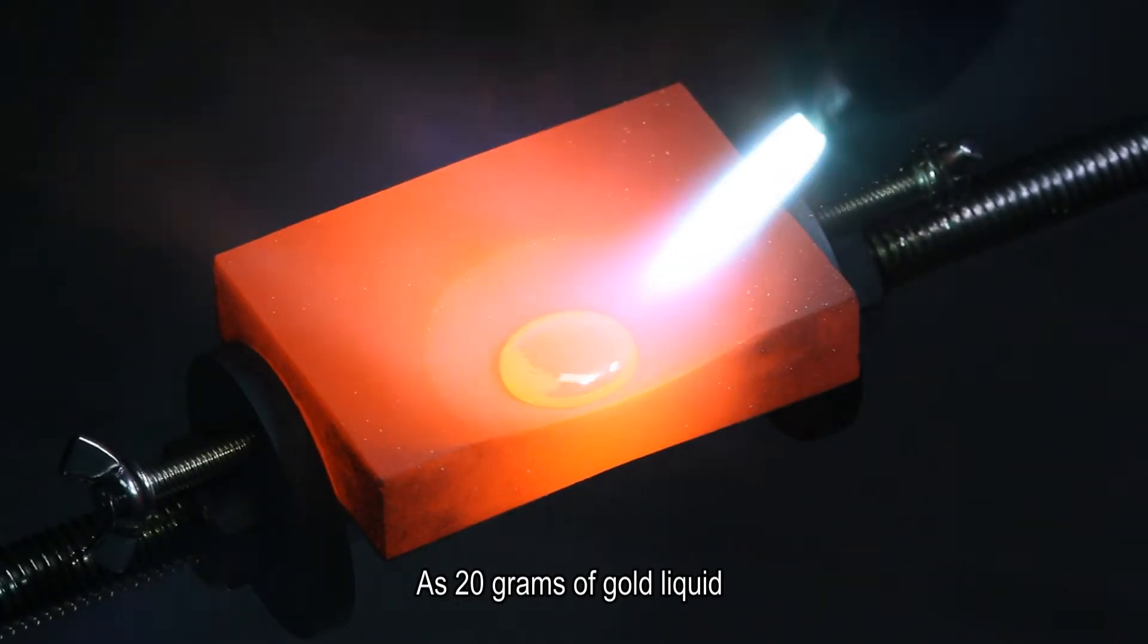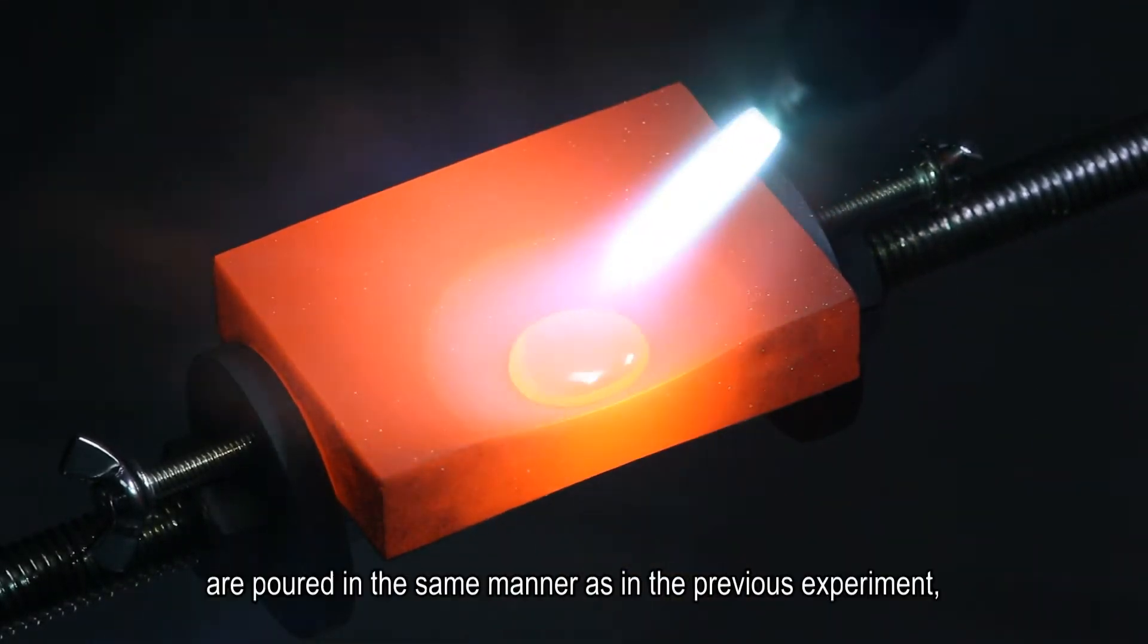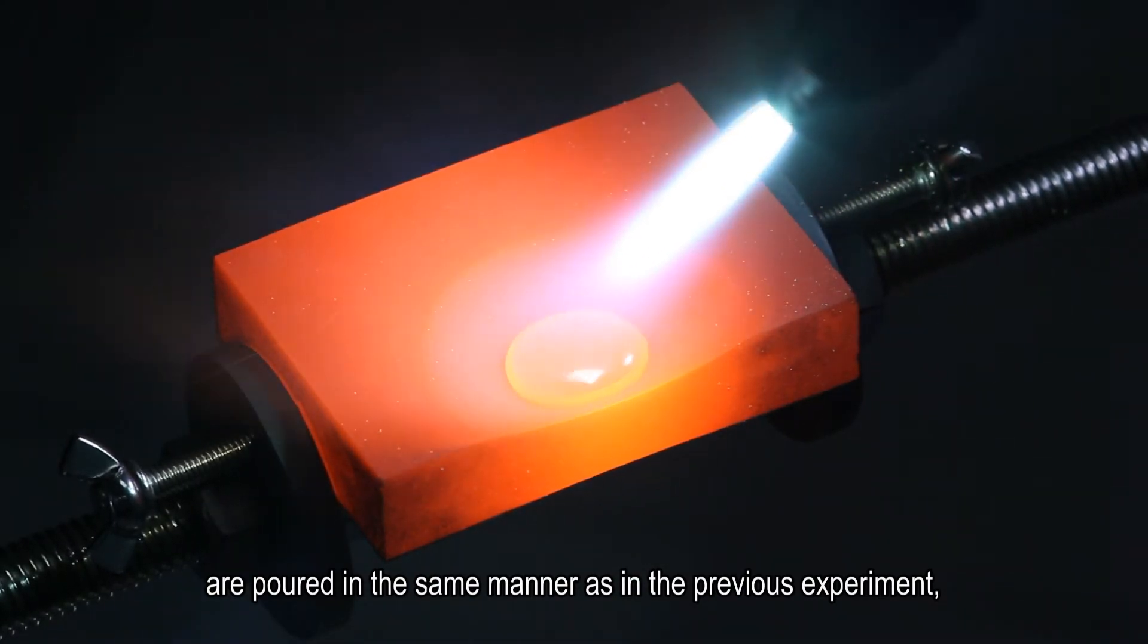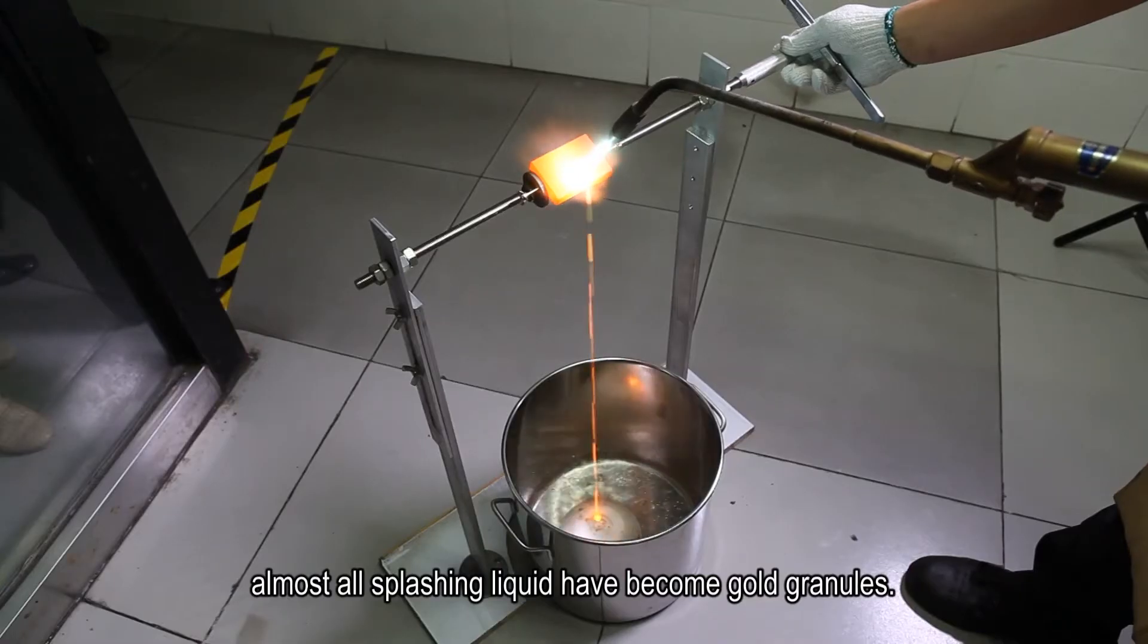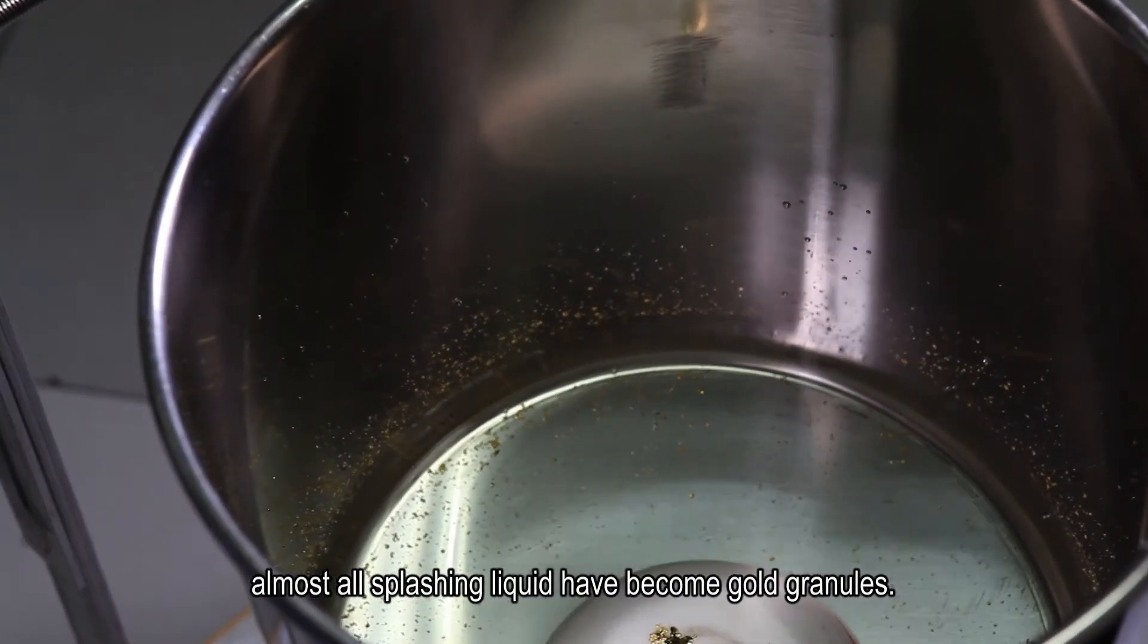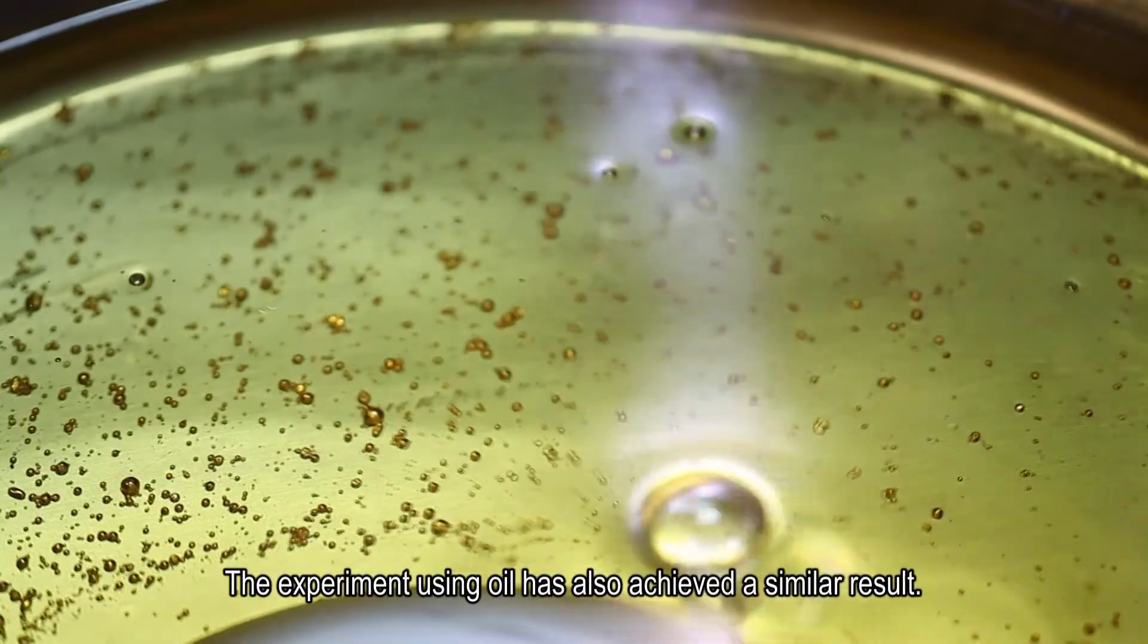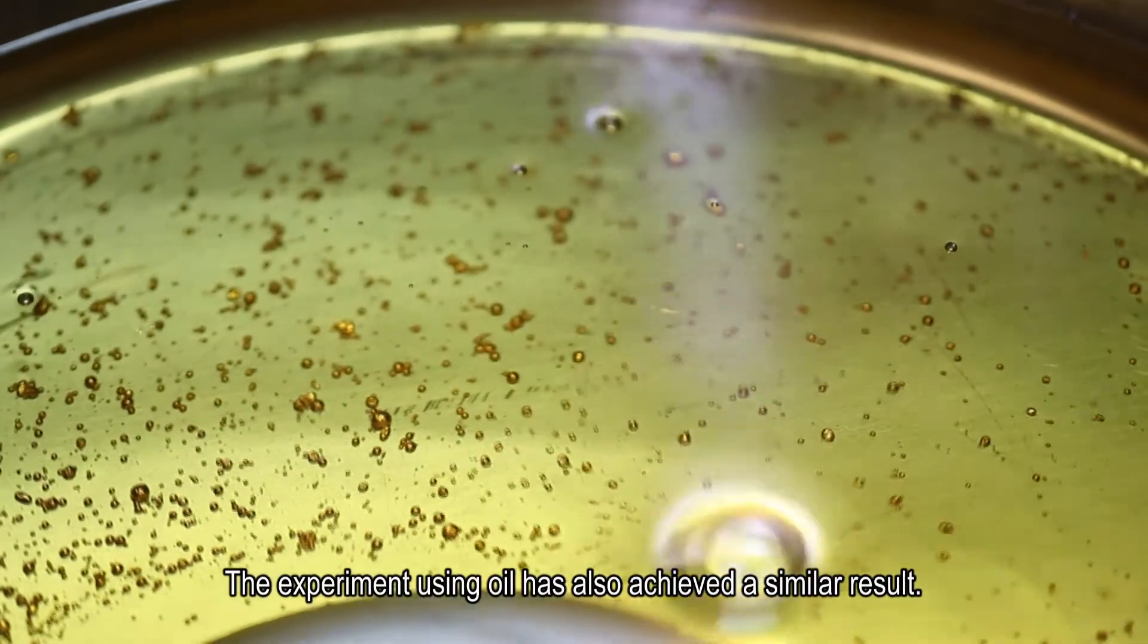As 20 grams of gold liquid are poured in the same manner as in the previous experiment, almost all splashing liquid has become gold granules. The experiment using oil has also achieved a similar result.